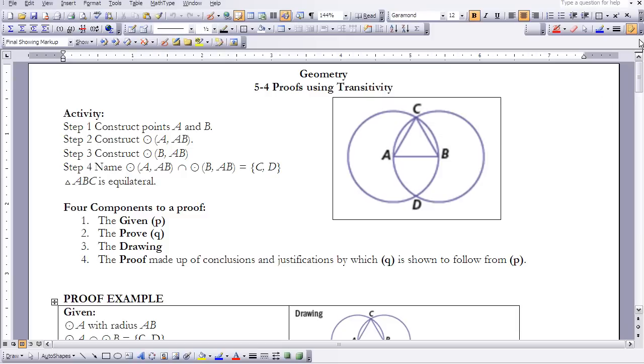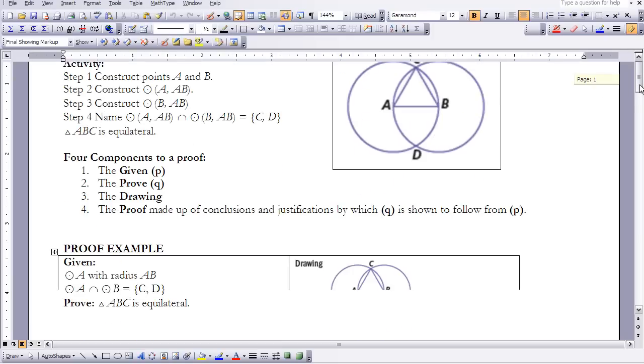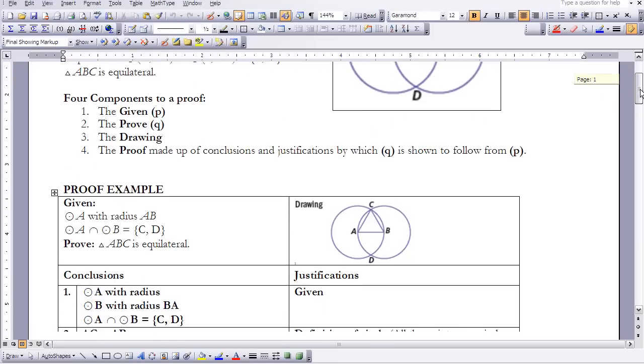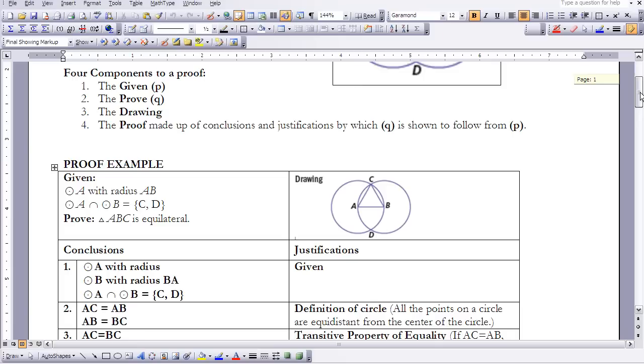What I want you to do now is look at this proof that I have here. First of all, let's talk about the four components of a proof. We've talked about these before, but now I want to formalize it and put it into some steps for you.